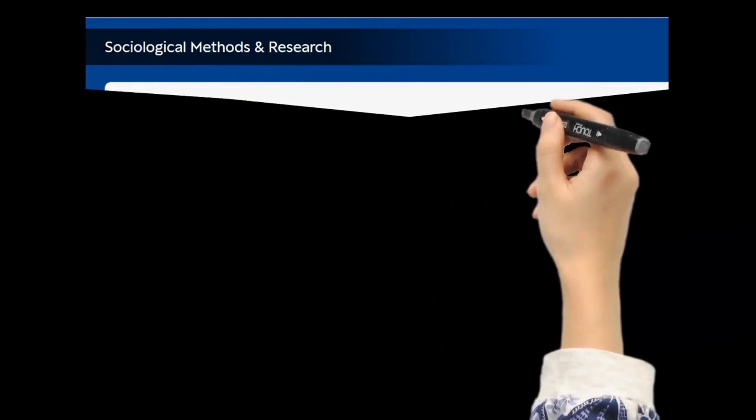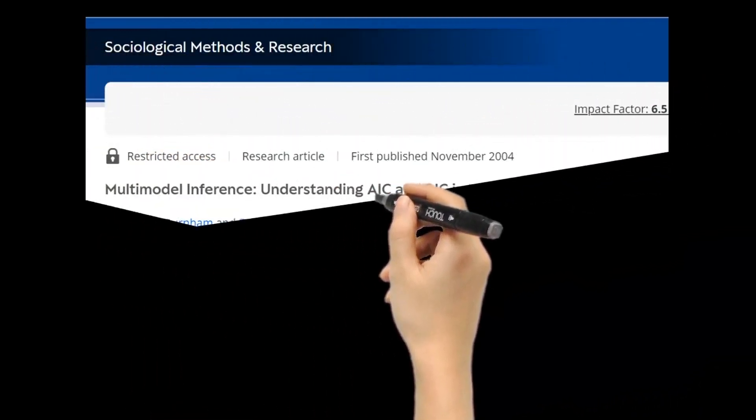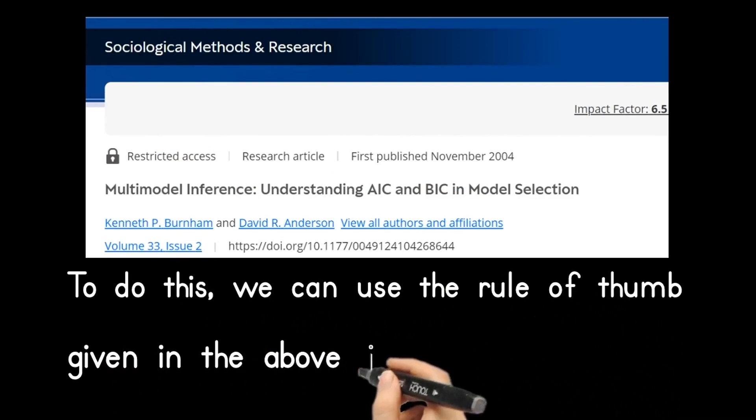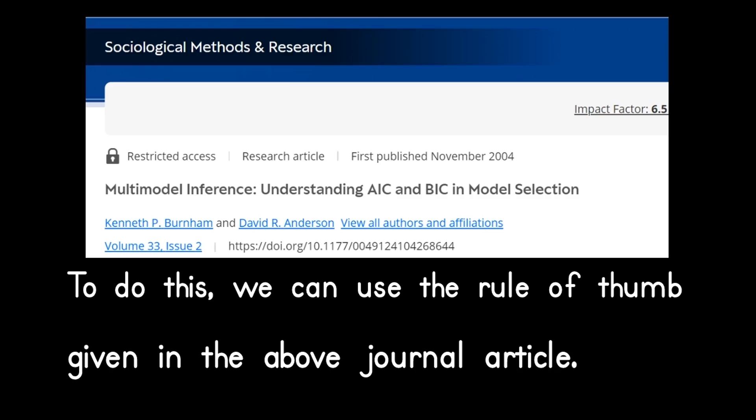To do this, we can use the rule of thumb given in the journal article titled Multimodal Inference, Understanding AIC and BIC in Model Selection by Kenneth P. Burnham and David R. Anderson, published in Sociological Methods Research in 2004.